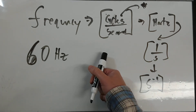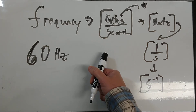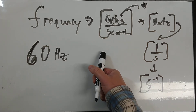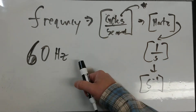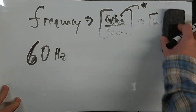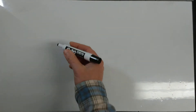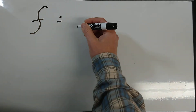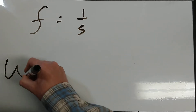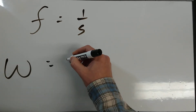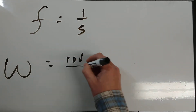Think of cycles like the word 'dozen' — dozen is not a unit, it's just a count of things. Cycles is just something about the system. So frequency f is in hertz, one over second. Angular frequency is omega, and that's the number of radians per second.